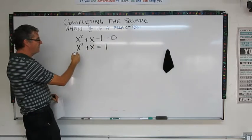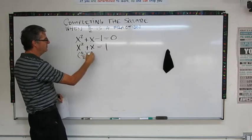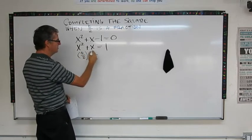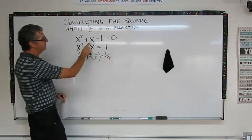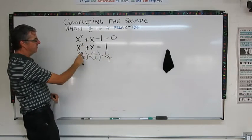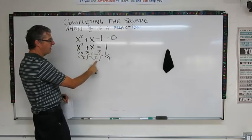Now find out what my b over 2 squared is. So b over 2 squared is going to be 1 over 2 squared, or 1 fourth, because my b is 1. So b over 2 is 1 half. So 1 half squared is 1 quarter.